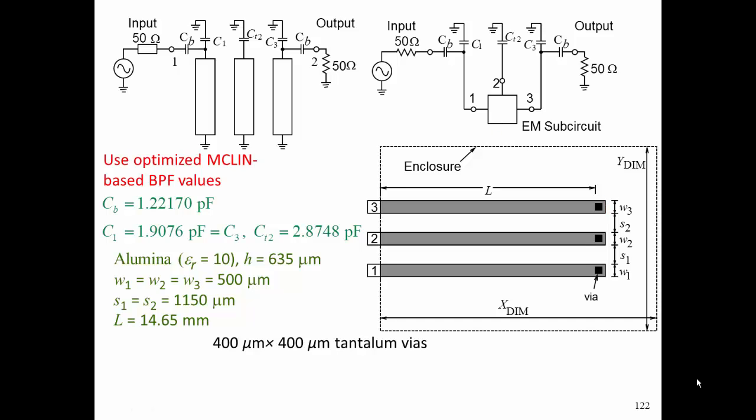For the EM simulation, we need to define our vias. We're going to choose tantalum vias that are 400 micron by 400 micron. In the simulator, they need to be square, but in reality they'll end up being cylinders. We need to choose the metalization - we're going to choose 6 micron gold metalization for both the ground plane and the microstrip themselves.